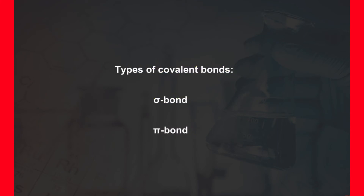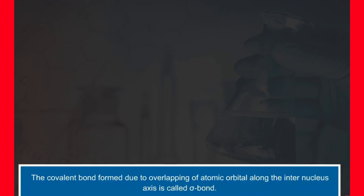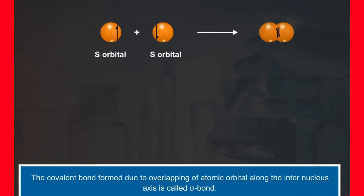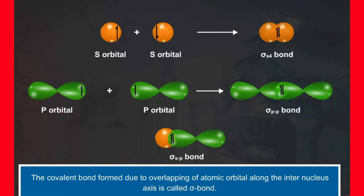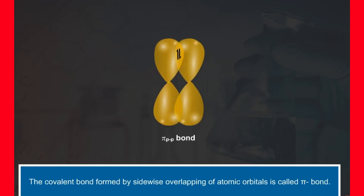There are two types of covalent bonds based on the pattern of overlapping: sigma bond and pi bond. The covalent bond formed due to overlapping of atomic orbitals along the internuclear axis is called a sigma bond — it is a stronger bond and cylindrically symmetrical. The covalent bond formed by sidewise overlapping of atomic orbitals is called a pi bond. In a pi bond, electron density is present above and below the internuclear axis. It is a relatively weaker bond since electrons are not strongly attracted by the nuclei and the extent of overlapping is smaller.